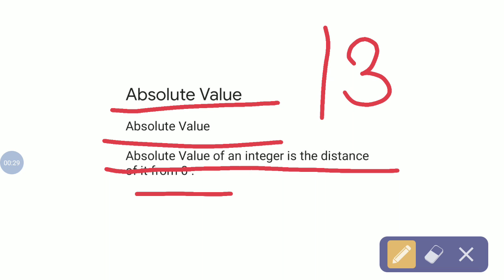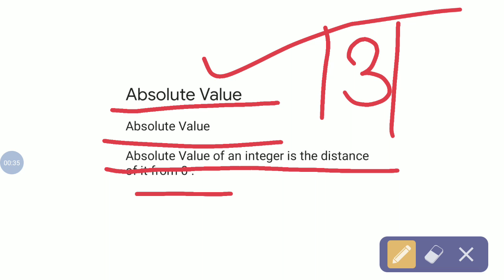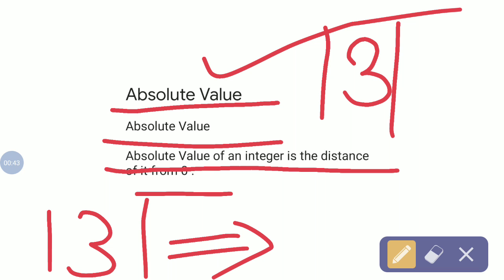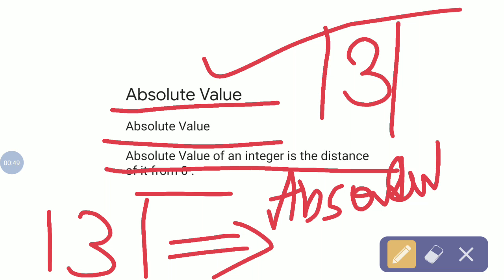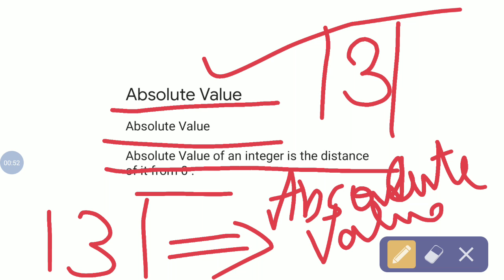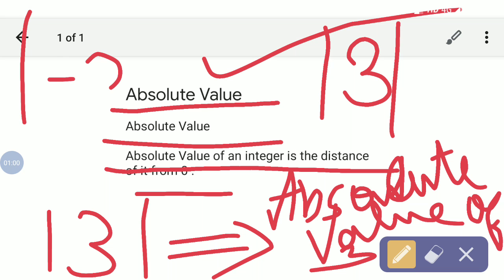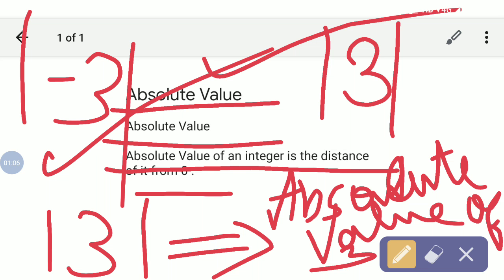You know why these brackets are put in absolute values? Suppose it is given bracket 3 bracket — this is read as 'absolute value of 3.' Similarly, if it is given bracket minus 3 bracket, we read this as 'absolute value of minus 3.' That is the purpose of the bracket.